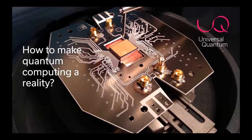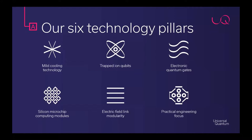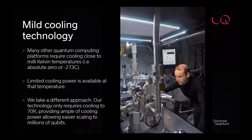How do you make practical quantum computing a reality? Practical quantum computing, in my mind, really does imply fault-tolerant operation. We believe we can scale to a million qubits, and the answer lies within six distinct technology pillars that I'll introduce now to explain how we're building practical quantum computers.